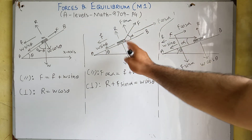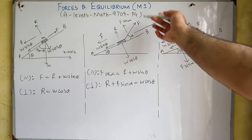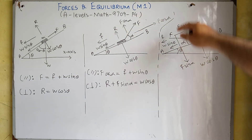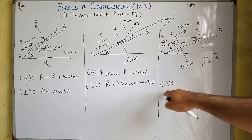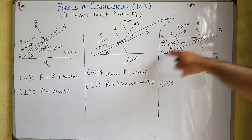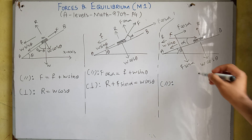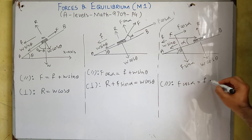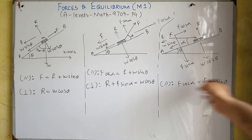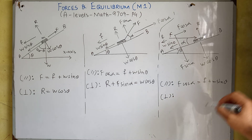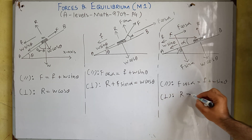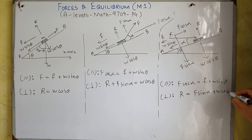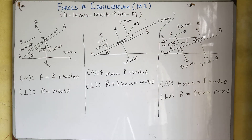All remaining forces are the same for both cases. For parallel components, F cos alpha still equals friction plus W sin theta — there is no change. For the perpendicular components, R equals F sin alpha plus W cos theta, because the vertical component of the applied force is now directed downward, adding to W cos theta. We will solve some examples related to these concepts in the next video.